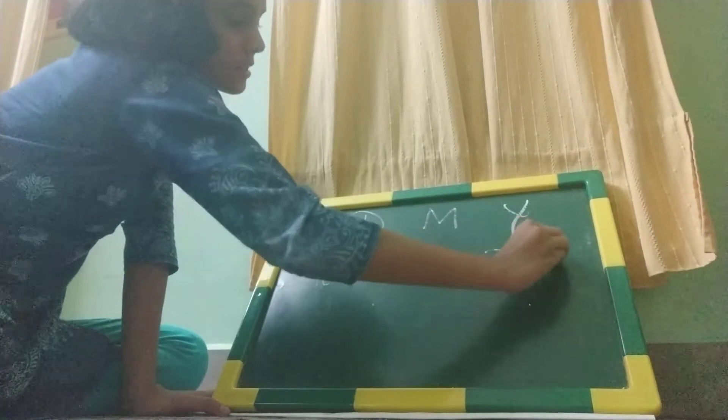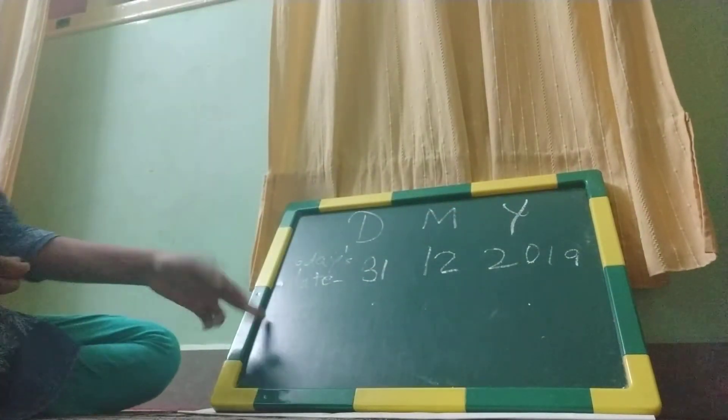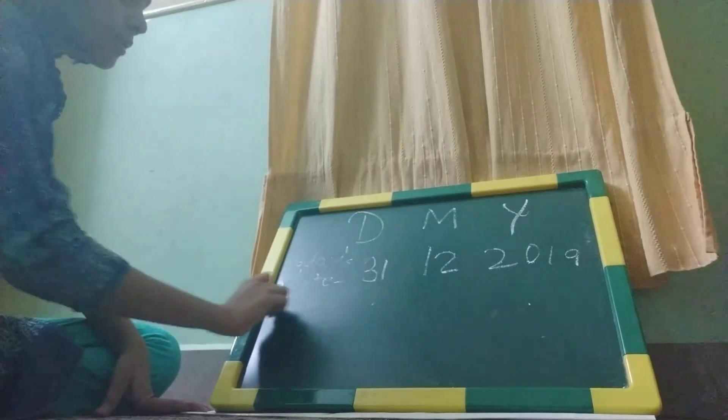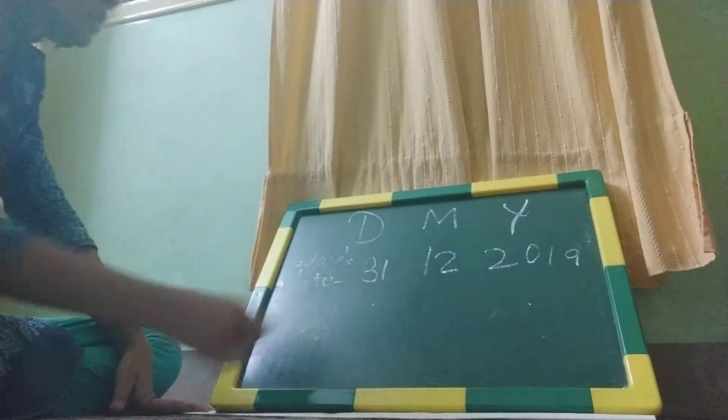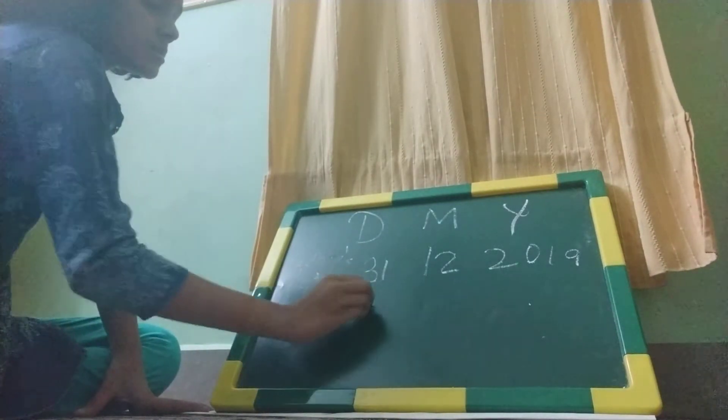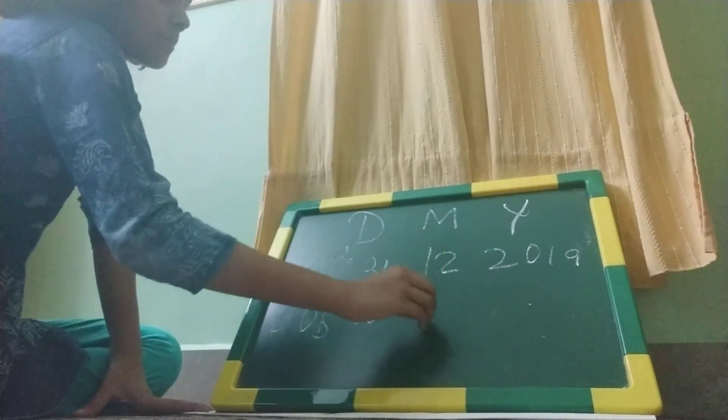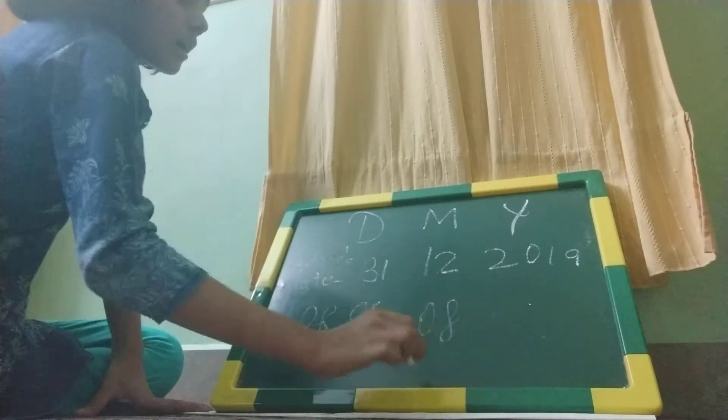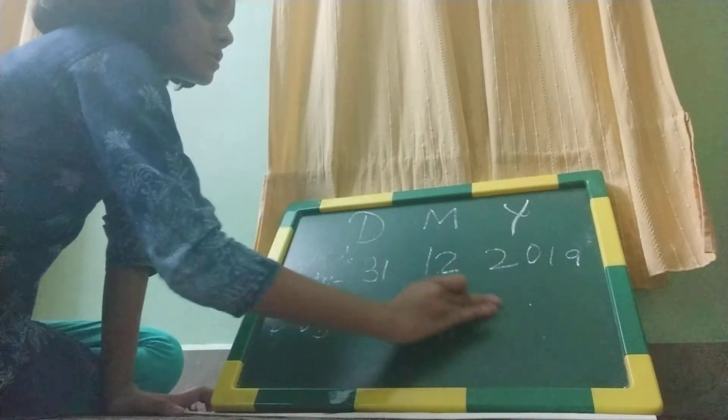31, month 12, and 2019 year. And here you have to write your DOB, date of birth. Suppose my date of birth is 06, that month is 08, and 2008.